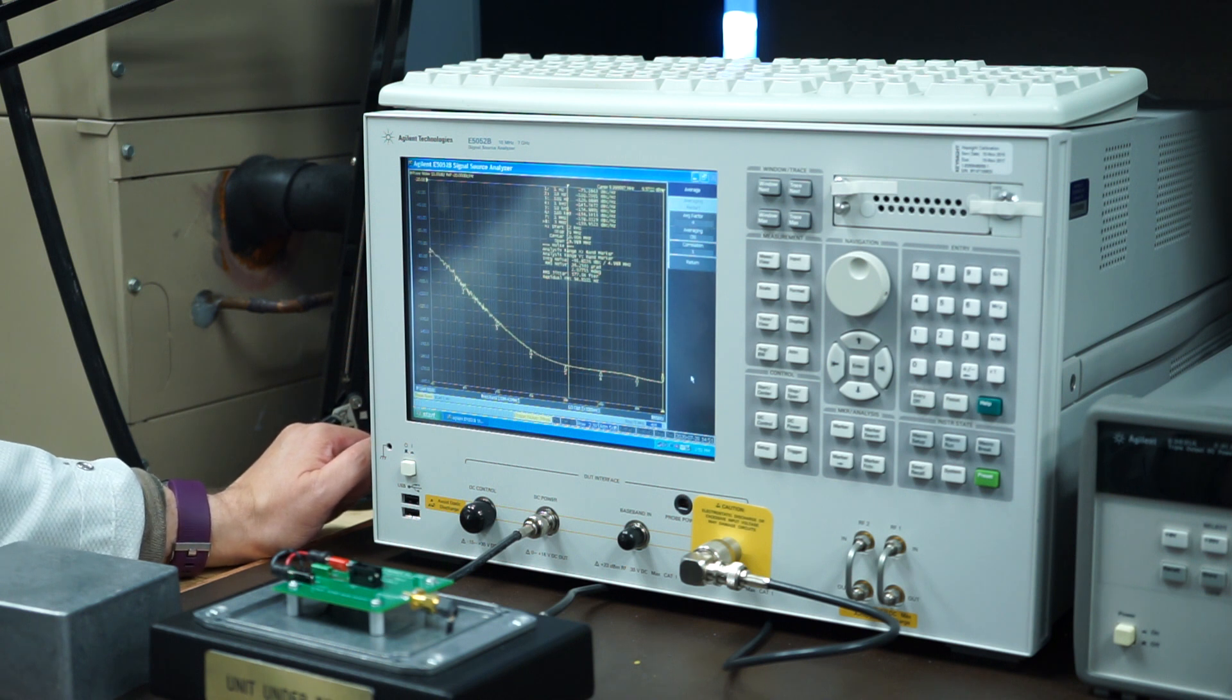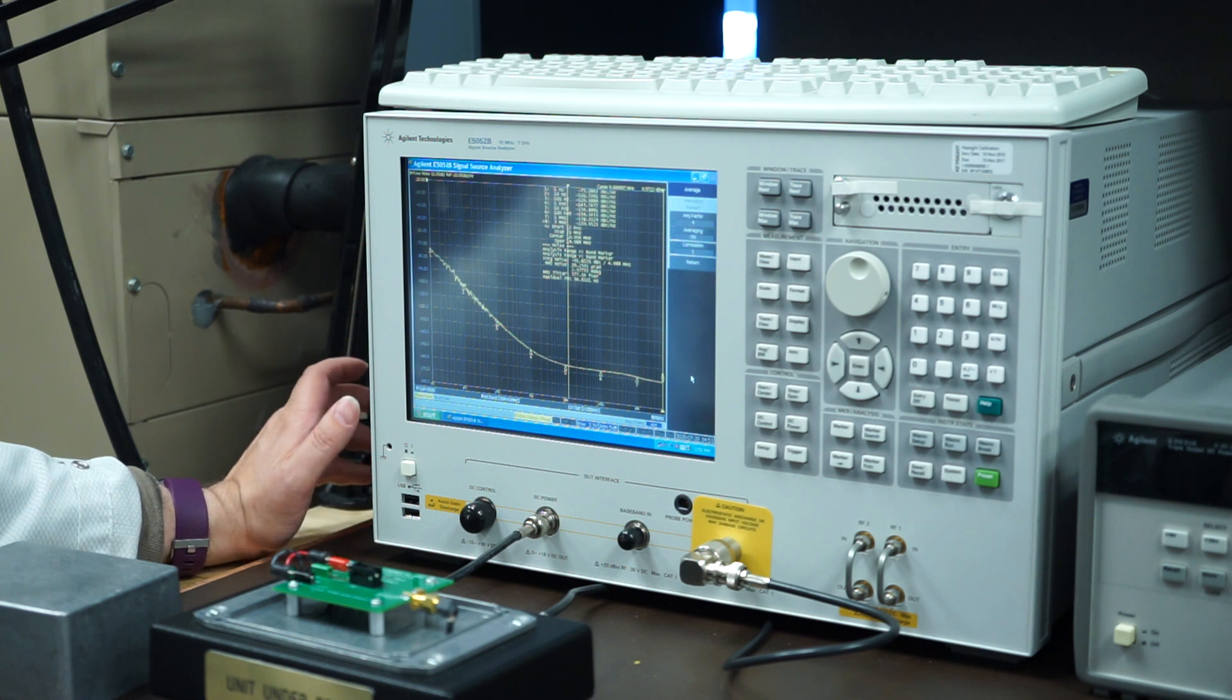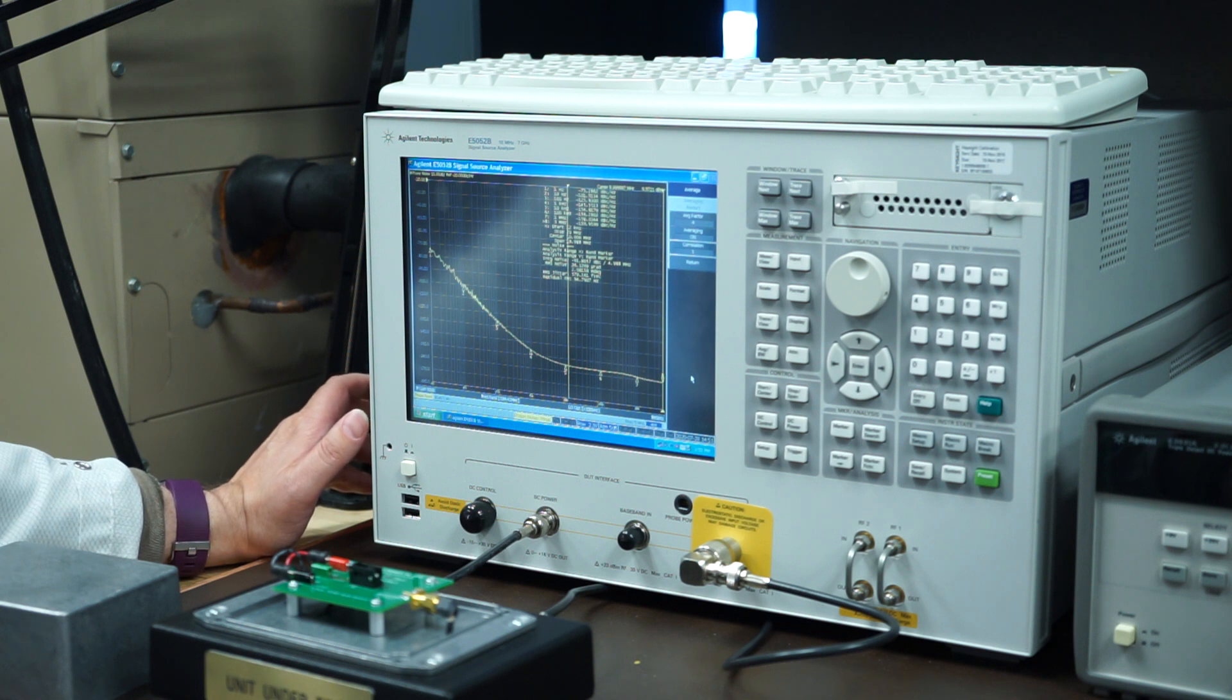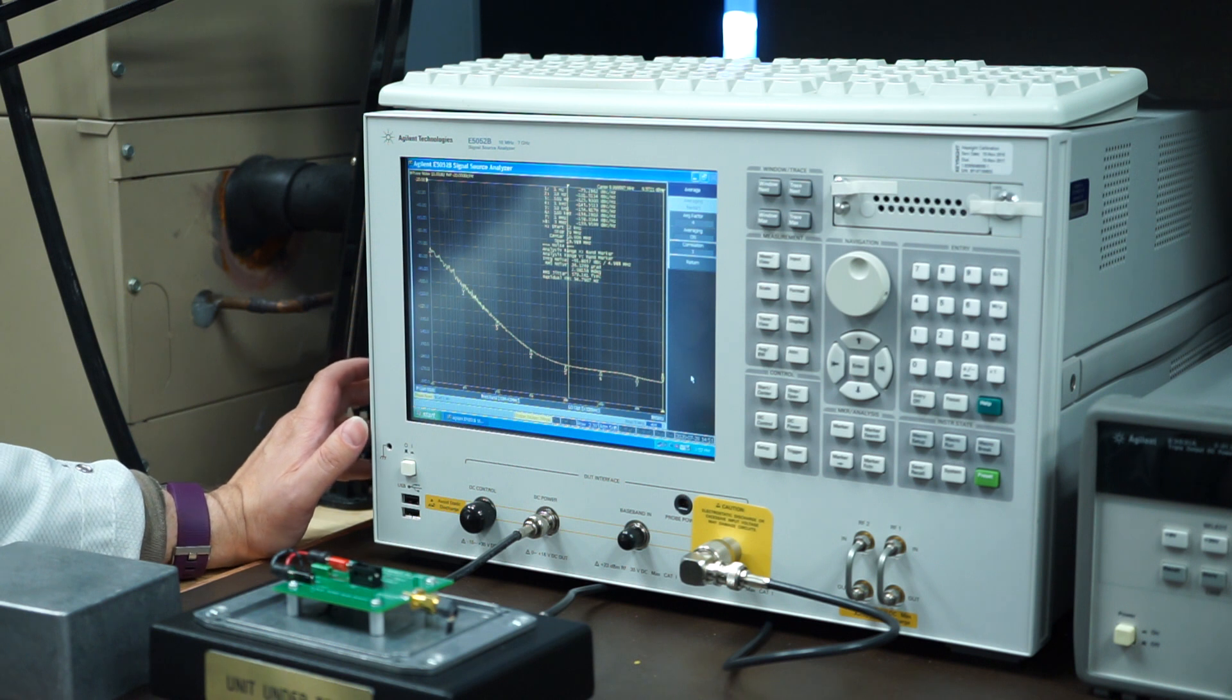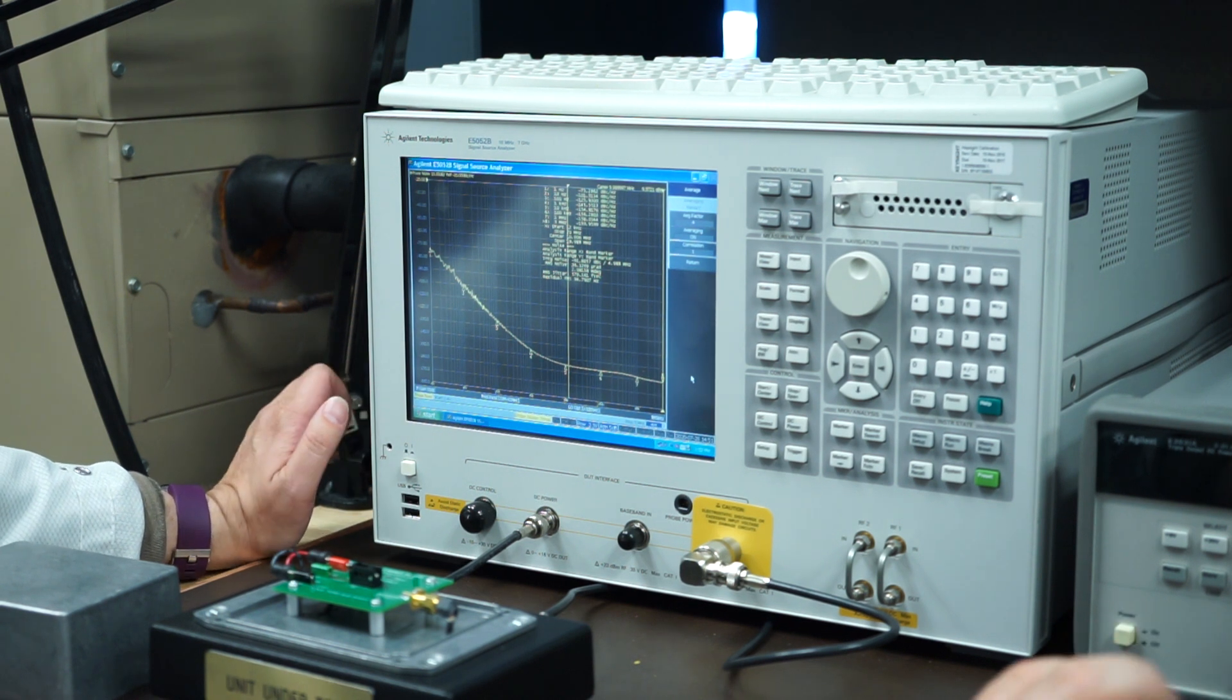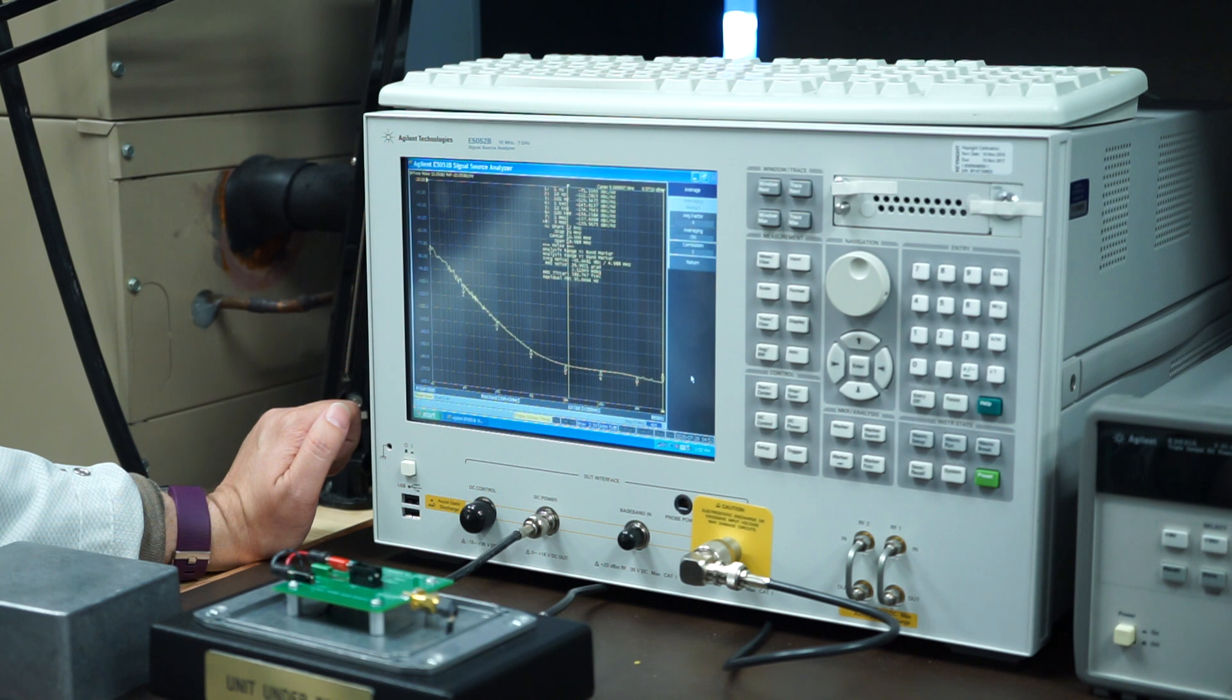Platronics uses the E5052B Agilent Technology Signal Source Analyzer. This is a common instrument in the field. The big advantage is you don't require two units, one being modified to a VCXO to beat against the other unit. So it makes the test and measurement much more straightforward.